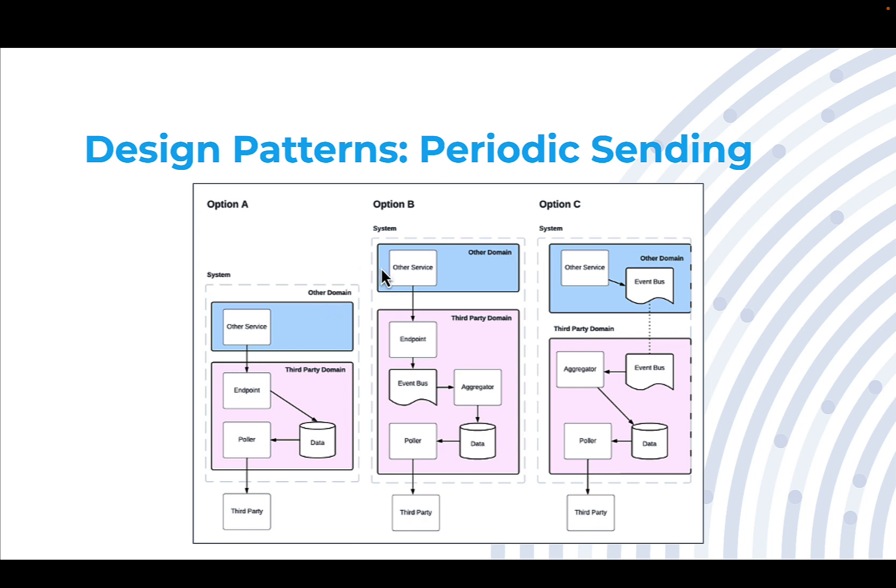The next option is to do a more traditional event driven approach where we have an endpoint exposed to our third party domain that receives a call to it, a REST call. We take that information and we store it in its raw form on the event bus, where we then have an application dedicated to reading that event bus and keeping track of a list of what needs to go out to it.